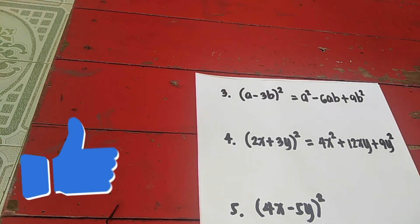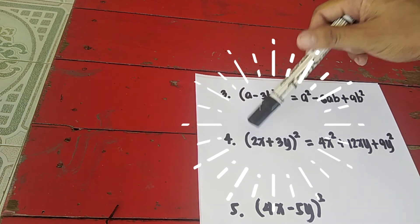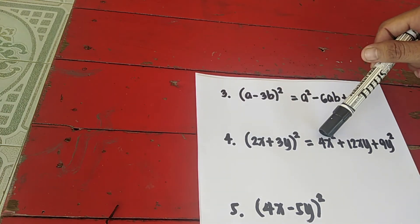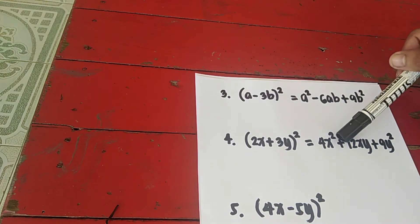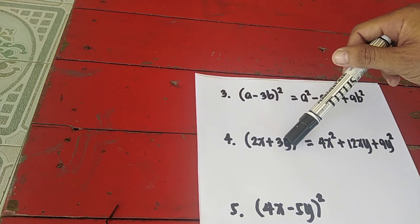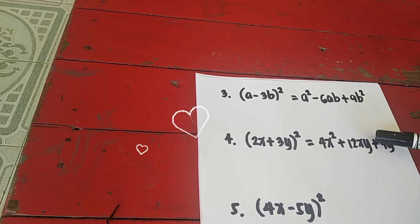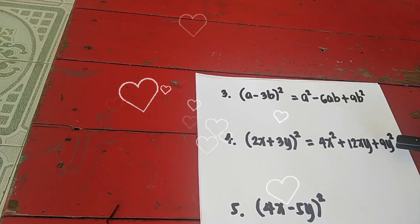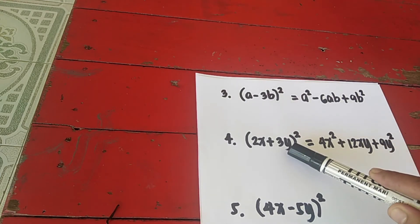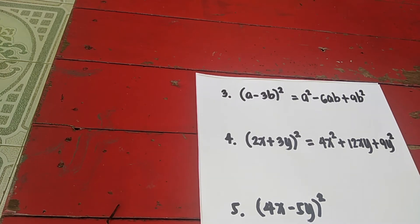To repeat: square the first term 2x to get 4x squared. This is plus, so the middle term is plus. Multiply 2x times 3y to get 6xy, times 2, so that is 12xy. The third term is always positive — 3y times 3y is 9y squared. It is very easy.